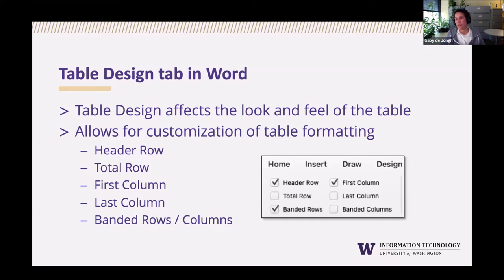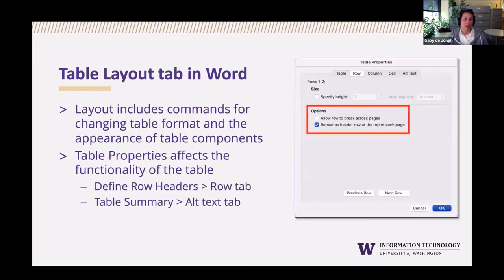Total row is the last row of the table; if selected, the last row will be formatted differently and is designed to summarize the rows above it. Last column applies special formatting to summarize earlier columns. The layout tab in Word includes commands for changing the entire table format and individual table components such as cells, columns, and rows. The layout tab also includes access to the table properties options, which affects the functionality of the table. Table properties is where authors assign the header row and can include a table summary, which is very helpful for screen reader users.